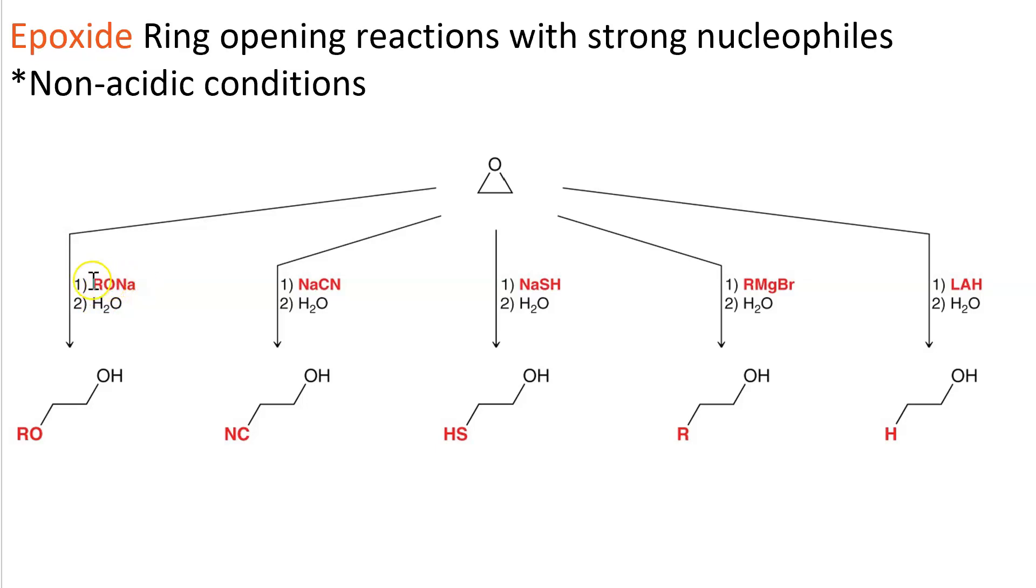If we use an alkoxide, like sodium ethoxide for instance, we attack at the less substituted ring position and we create an ether that is vicinal to an alcohol.